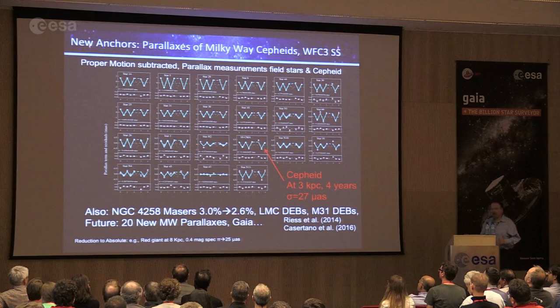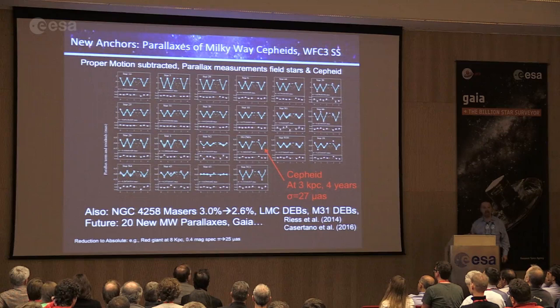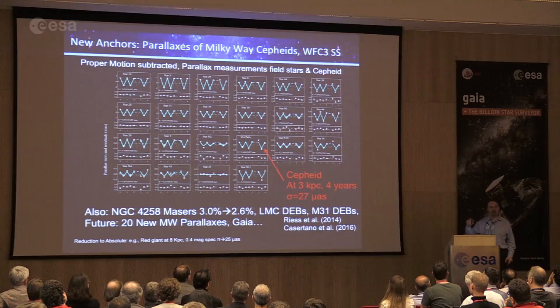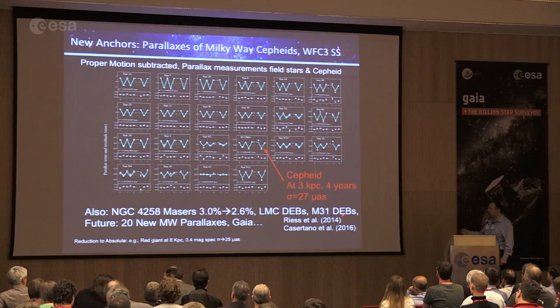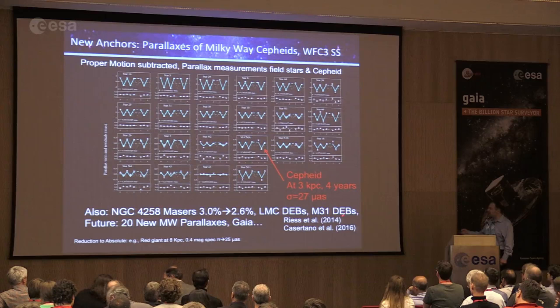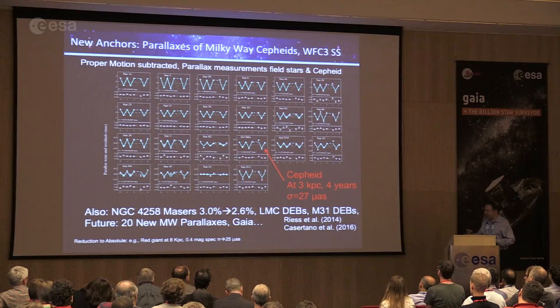We have other ways to measure geometric distances to Cepheids besides parallax. The famous galaxy NGC 4258, about 7 megaparsecs away, has masers — water clouds in Keplerian motion around its center — that geometrically determine its distance to 2.6%. Also, in the Large Magellanic Cloud there are detached eclipsing binaries giving geometric distances. The same applies to M31. We're trying to measure 20 of these, but Gaia will ultimately blow away all these attempts.